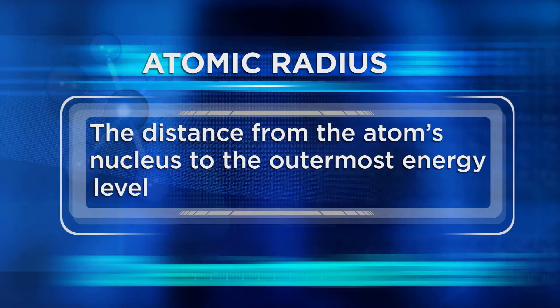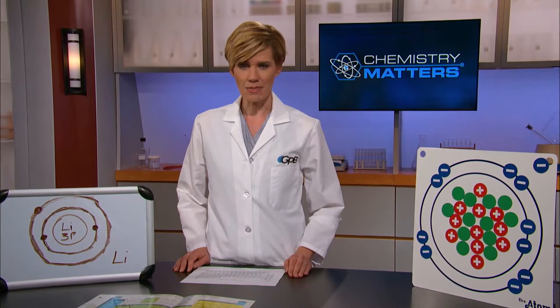Atomic radius gives us an idea of the size of an atom, and is found by measuring the distance between the nuclei of two touching atoms, and then dividing that distance in half. There are some unusual trends in the sizes of the atoms, as we will soon see. With these three properties of an atom in mind, let's go back to our classroom to see how these properties change throughout the periodic table.